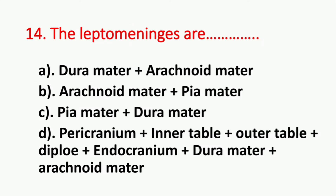Question number 14. The leptomeninges are? Option A: Dura mater and arachnoid mater. Option B: Arachnoid mater and pia mater. Option C: Pia mater and dura mater. Option D: Pericranium, inner table, outer table, diploe, endocranium, dura mater and arachnoid mater. The answer is Option B, Arachnoid mater and pia mater.